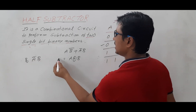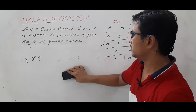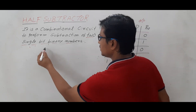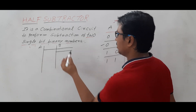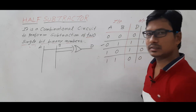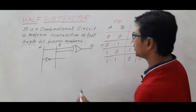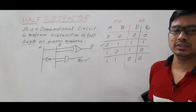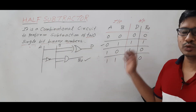So the difference = A XOR B, and borrow = A'·B. Now let me construct the combinational circuit. There are two inputs A and B. An XOR gate on A and B gives the difference output. For the borrow, I take input A through a NOT gate to get A', then AND it with B to produce the borrow output.